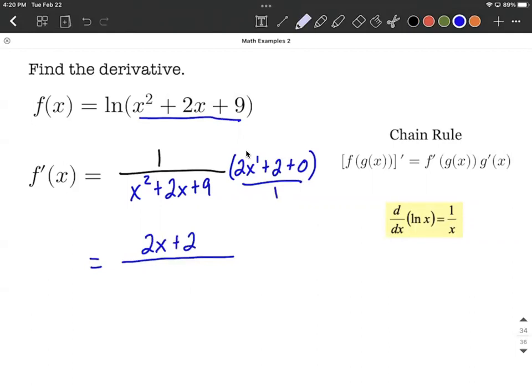The denominator is x squared plus 2x plus 9. Multiplying by 1 doesn't change anything. I hope this helps with applying the chain rule to a function with a natural log.